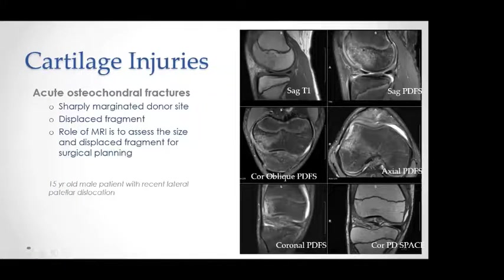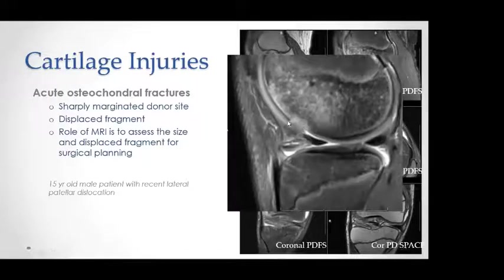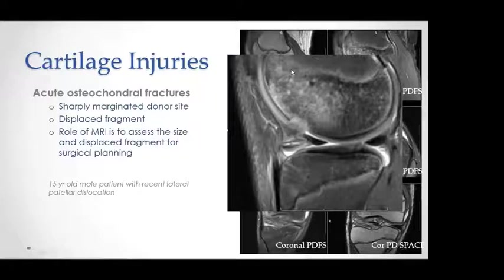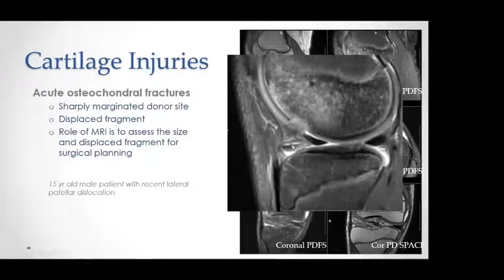Acute osteochondral fracture: this 15-year-old patient suffered lateral patellar dislocation. We see a focal area of sharply marginated osteochondral defect involving the anterior aspect of the lateral femoral condyle, with a detached osteochondral fragment in the anterior aspect of the lateral tibiofemoral compartment. This is acute because of the surrounding bone edema. MRI provides valuable information for surgeons, who in these circumstances would carry out re-implantation of the osteochondral fragment.